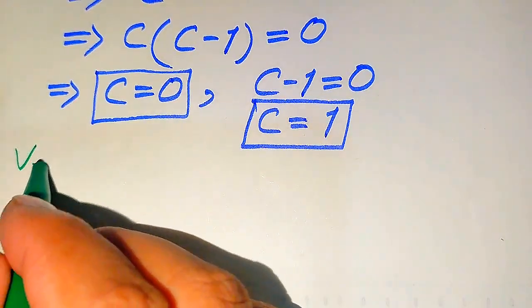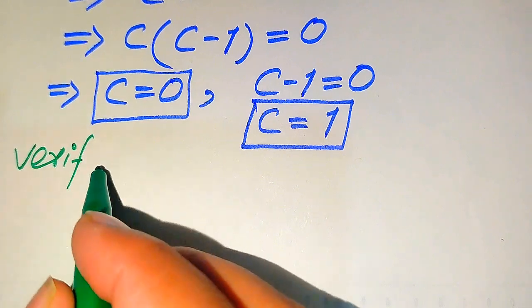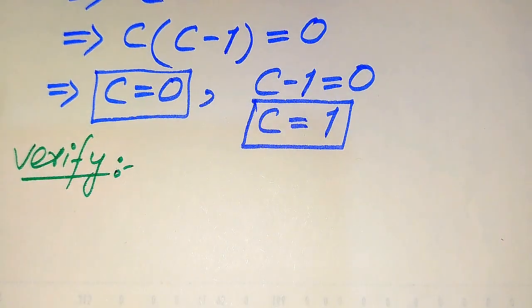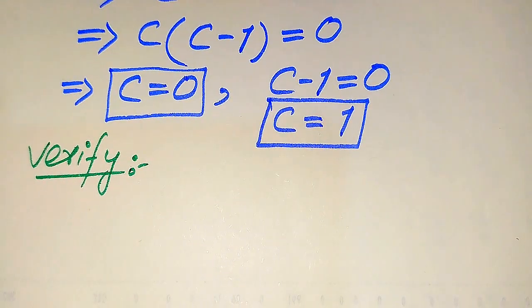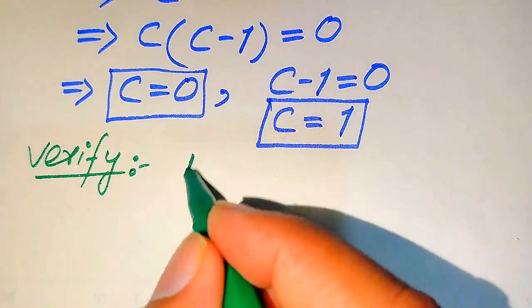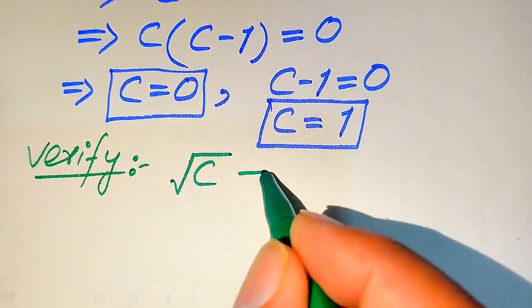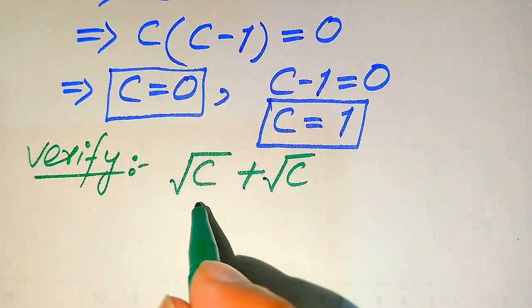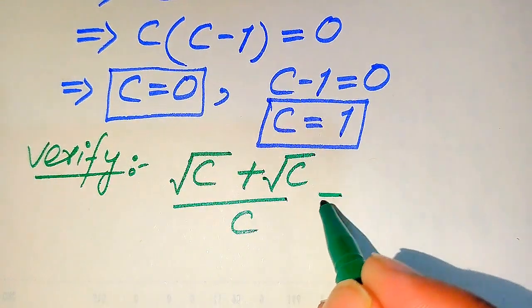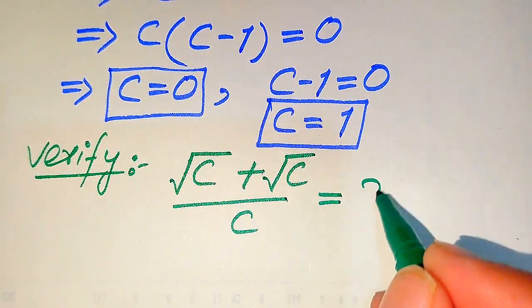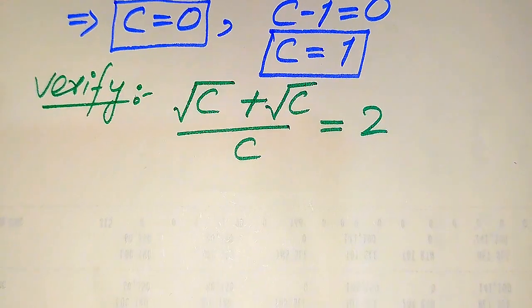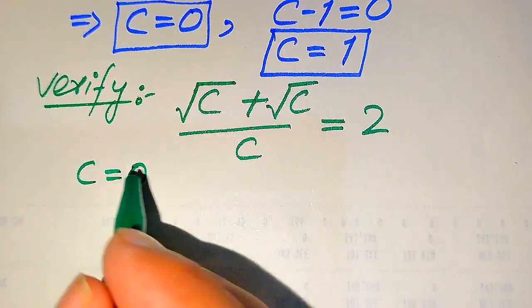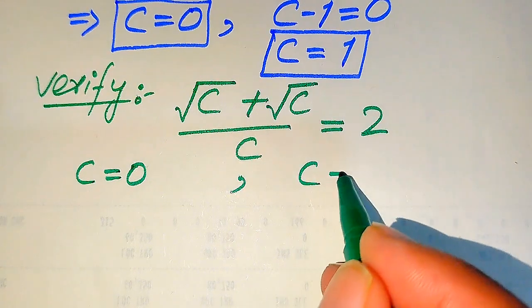Now we need to verify whether both roots are solutions or extraneous roots. We copy down the given equation: square root of C plus square root of C divided by C equals 2. We will verify C equals 0 on one side and C equals 1 on the other.